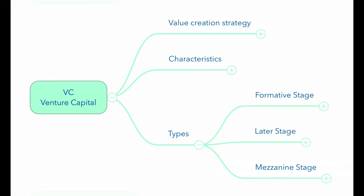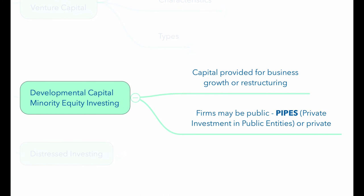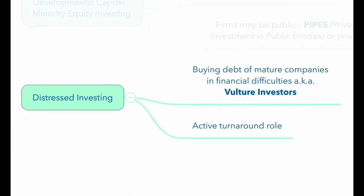Developmental capital, also called minority equity investing, earns profits from funding business growth or restructuring. The firms financed may be either private or public; if public, such financing is referred to as PIPEs, or private investment in public equities. Distressed financing involves buying debt of mature companies experiencing financial difficulties such as default or bankruptcy, with investors taking an active role in the turnaround. Distressed debt investors are sometimes referred to as vulture investors.